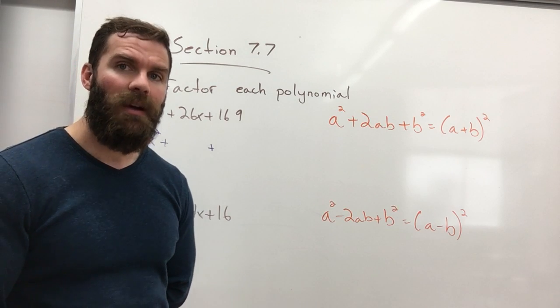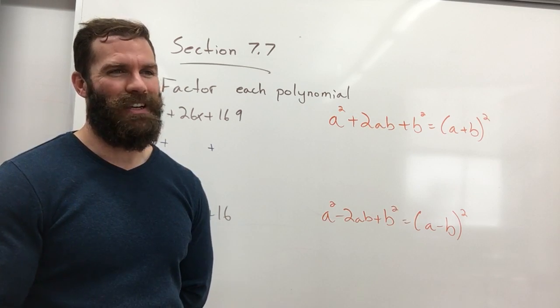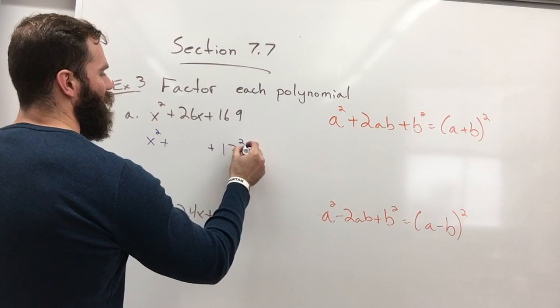A number squared gives you 169. Because I'm pretty good with my multiplications, I can do this in my head. I know that 13 times 13 is 169.